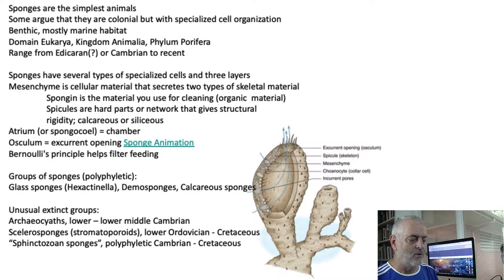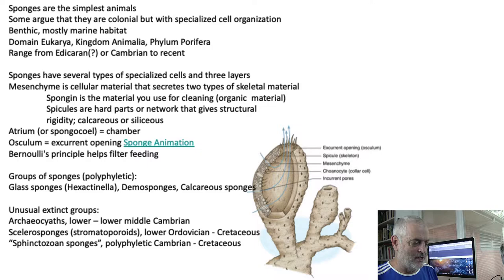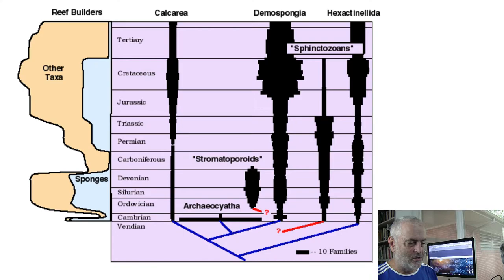There's a group called the sclerosponges — we used to call those stromatoporoids, not to be confused with stromatolites. Stromatoporoids are a sponge-type organism. They lived in relatively flat, board-like forms growing on the seafloor, but they're actually regarded as a type of sponge now — so they're called sclerosponges. The sphinctozoan sponges are polyphyletic in and of themselves and make it all the way into the Cretaceous, going extinct at the KPG boundary.